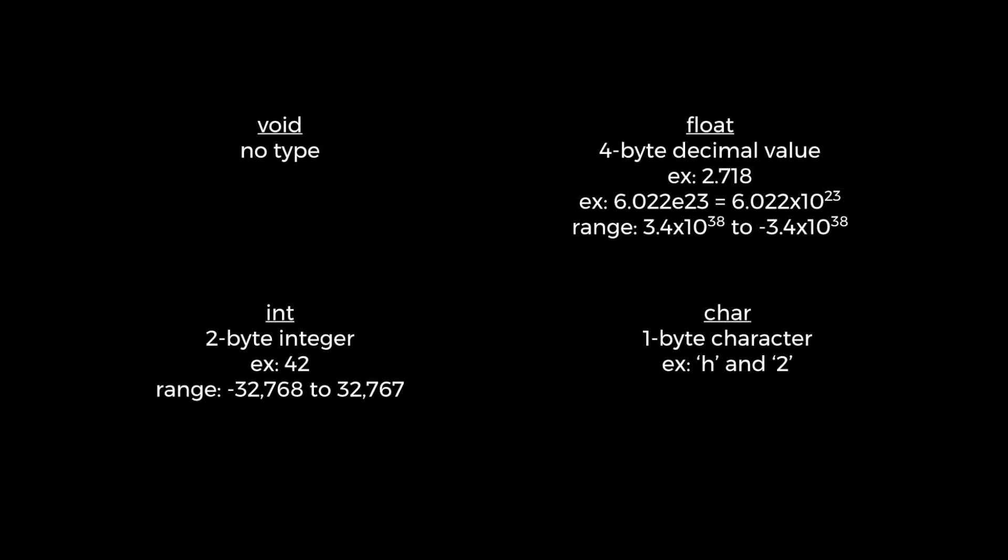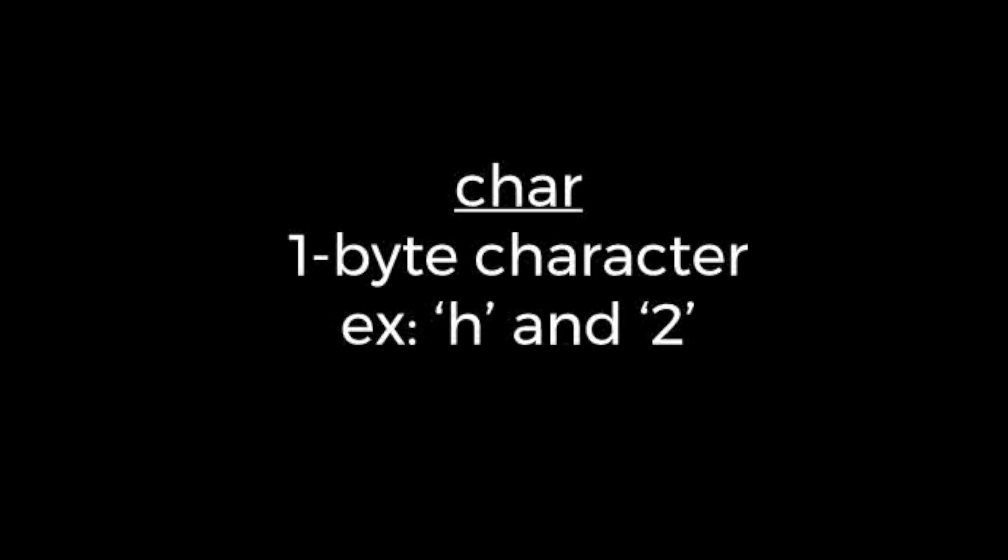Finally, we have the character type, which is a one-byte integer that corresponds to an English letter, number, or symbol. In C, the character type is abbreviated to its first four letters and is often pronounced char or char.